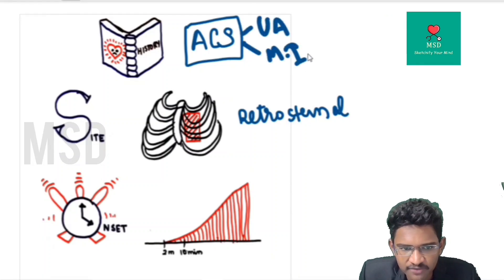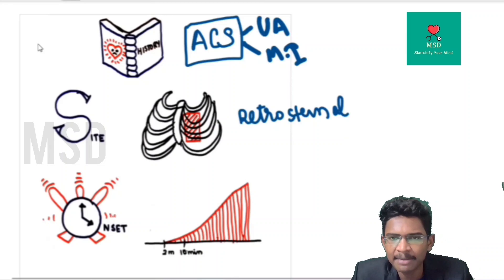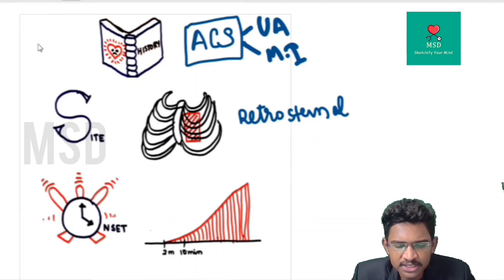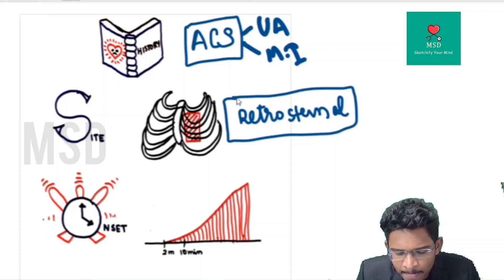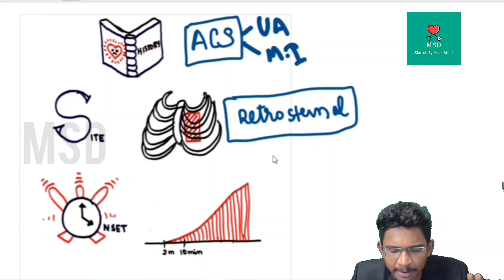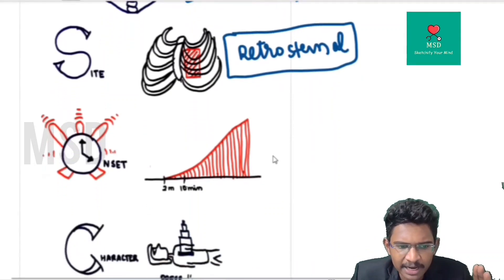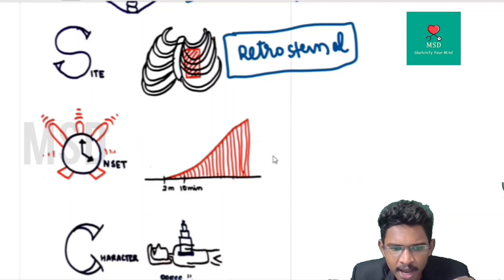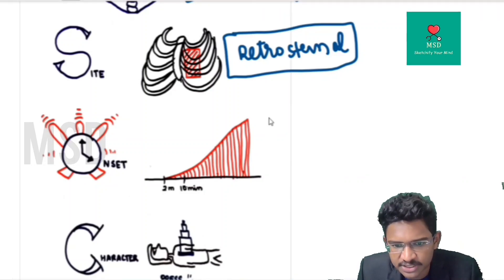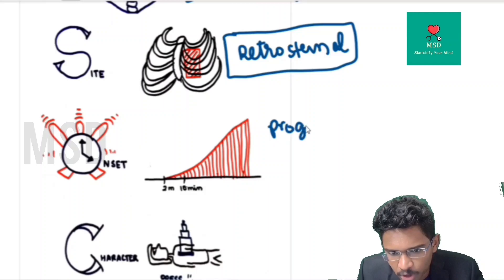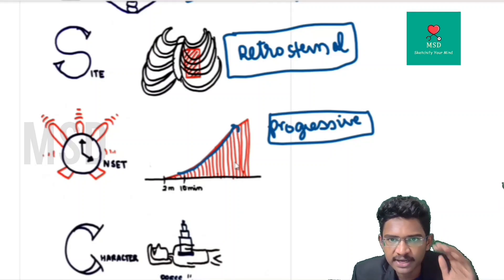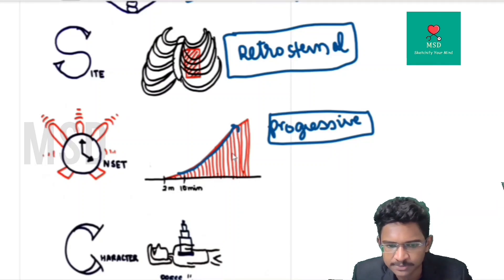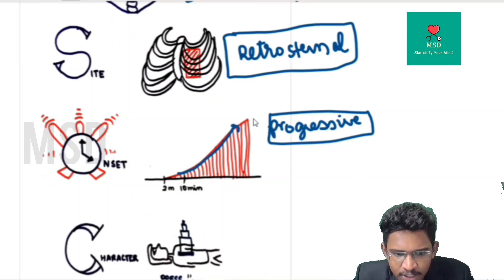We'll take the example of an MI patient — acute coronary syndromes, which includes unstable angina as well as acute myocardial infarction. The site of chest pain is mostly retrosternal. The onset: pain starts over 2 to 10 minutes and is progressive in nature — crescendo in nature, meaning it increases as time passes. This indicates a myocardial infarction.